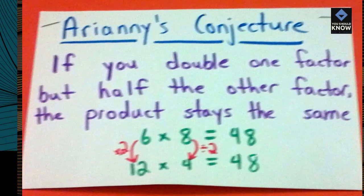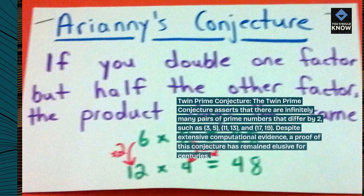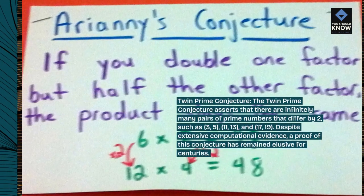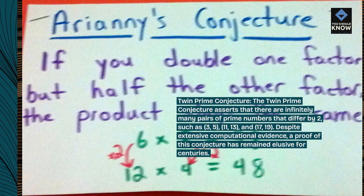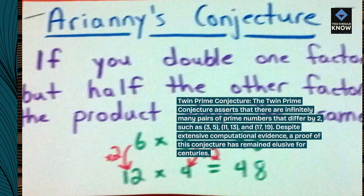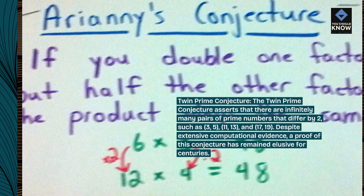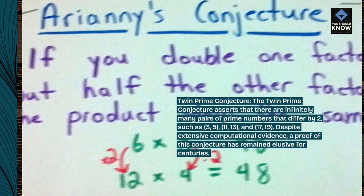Twin Prime Conjecture: The twin prime conjecture asserts that there are infinitely many pairs of prime numbers that differ by two, such as 3 and 5, 11 and 13, and 17 and 19. Despite extensive computational evidence, a proof of this conjecture has remained elusive for centuries.